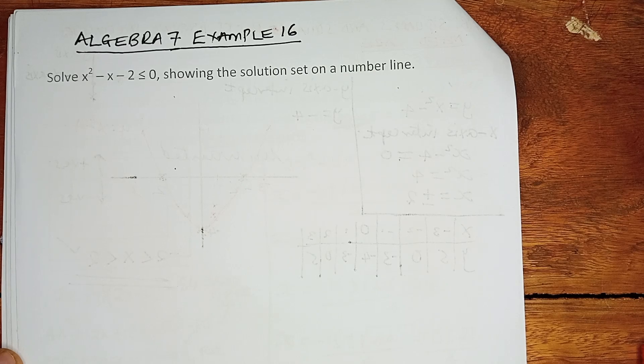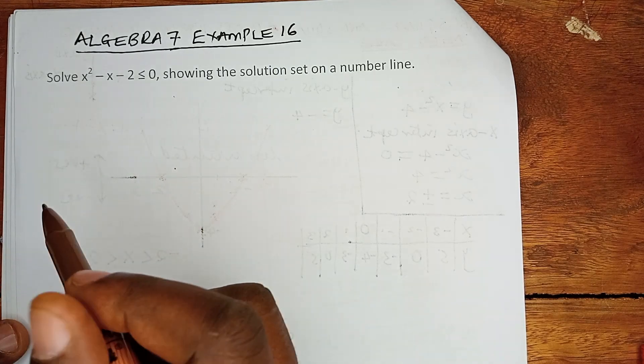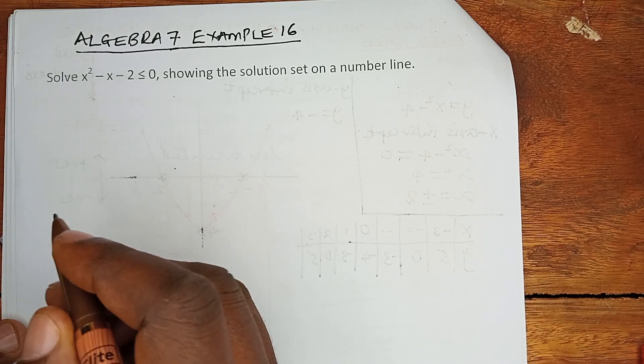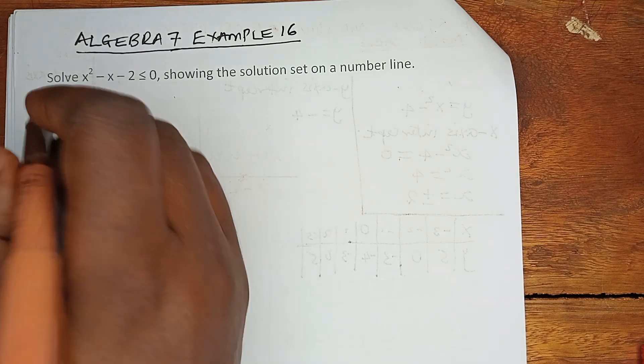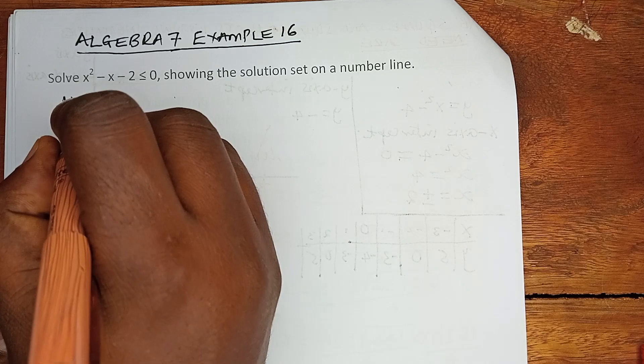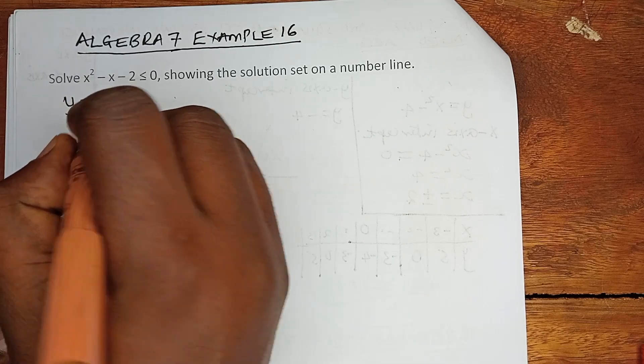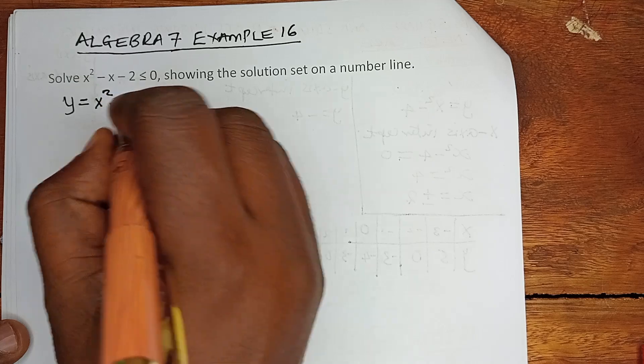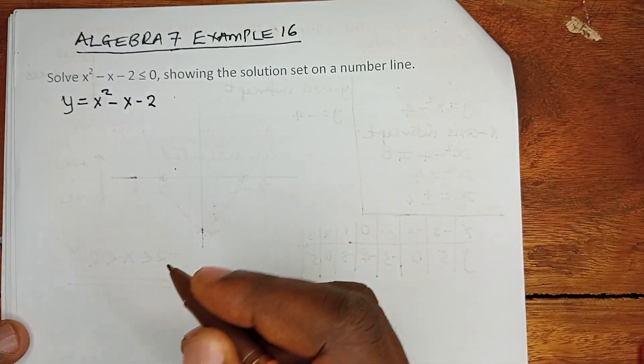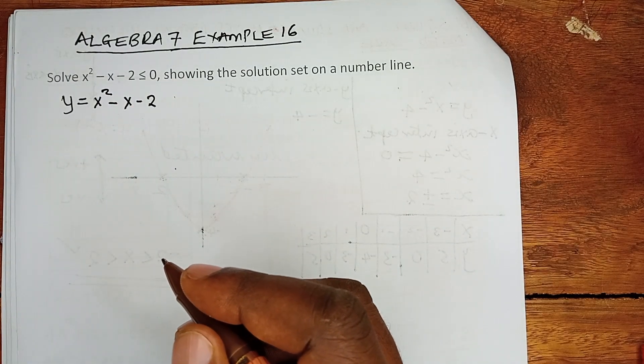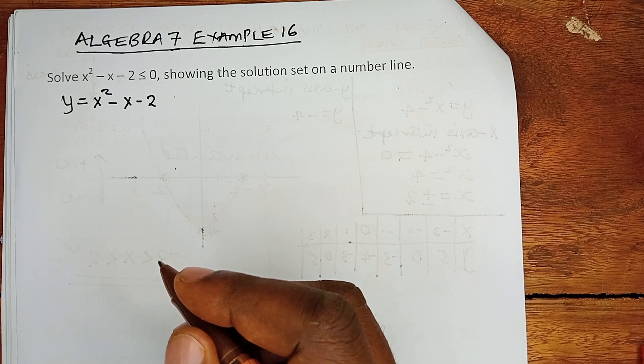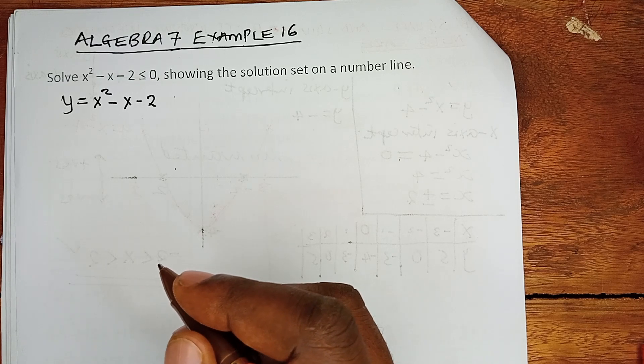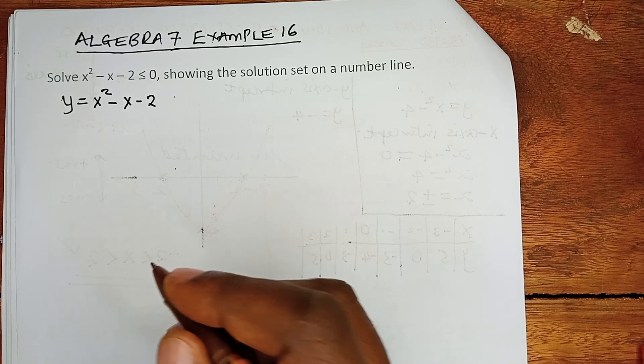First things first. Because this is a region, what is the boundary? The boundary is a graph, which should be y equals x squared minus x minus 2. That is the graph that we need to plot, at least to get the boundary.